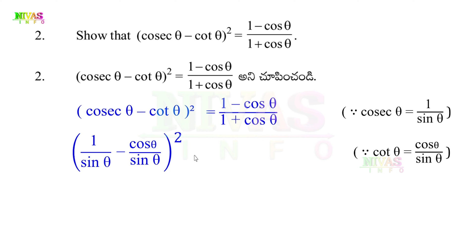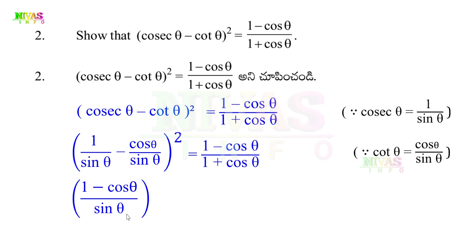Substituting: (1/sinθ - cosθ/sinθ)². Since the denominators are the same, this becomes ((1 - cosθ)/sinθ)², which equals (1 - cosθ)² / sin²θ. The right-hand side is (1 - cosθ)/(1 + cosθ).